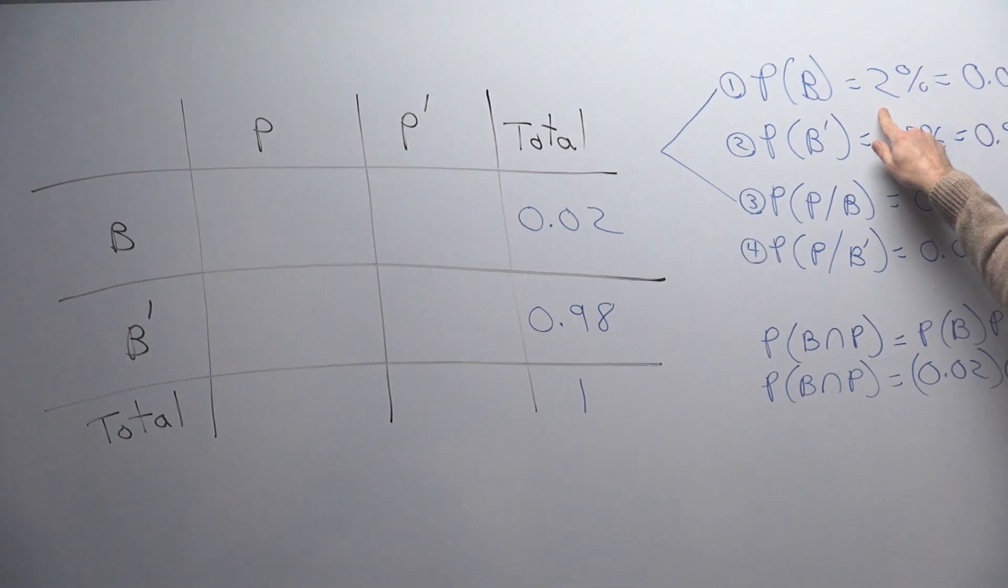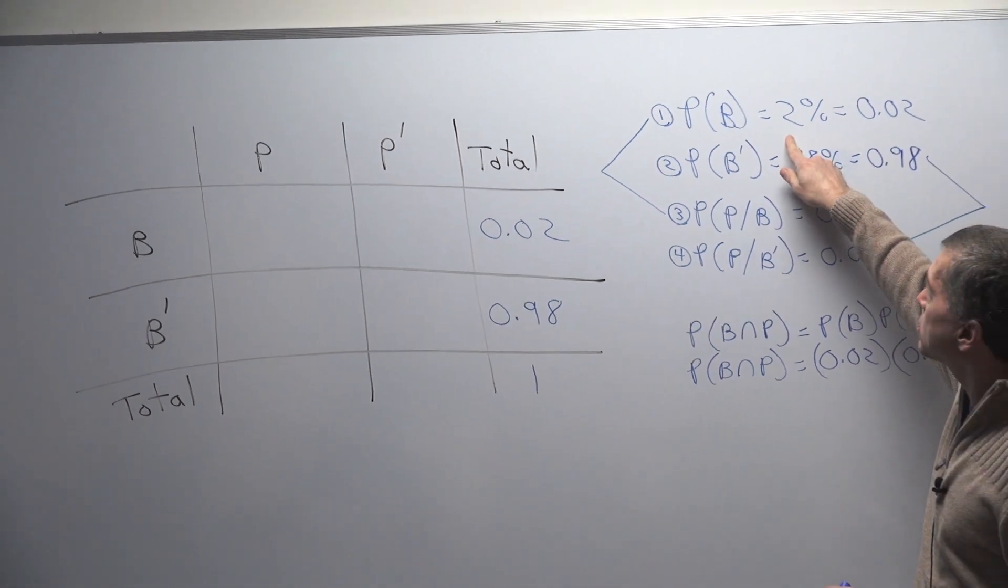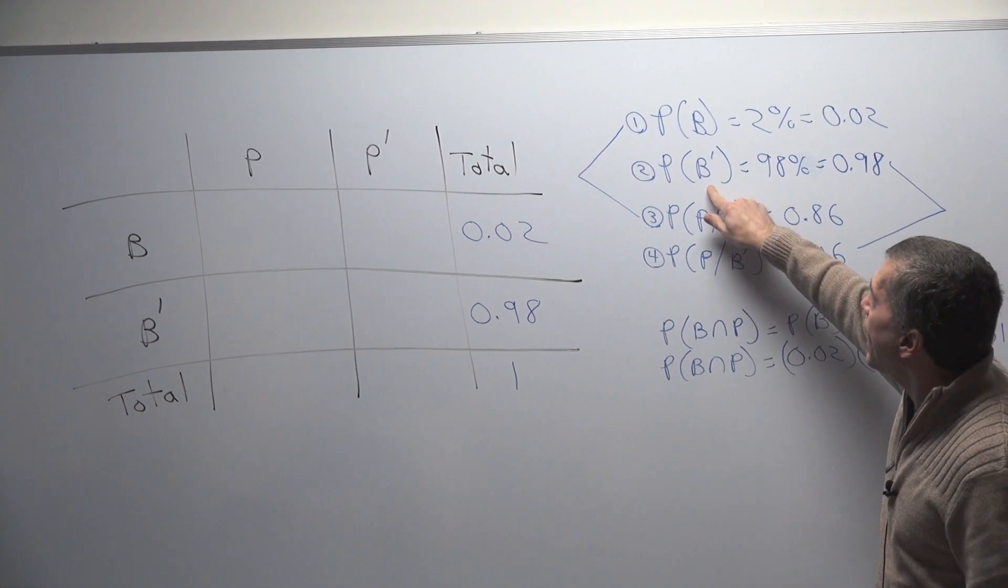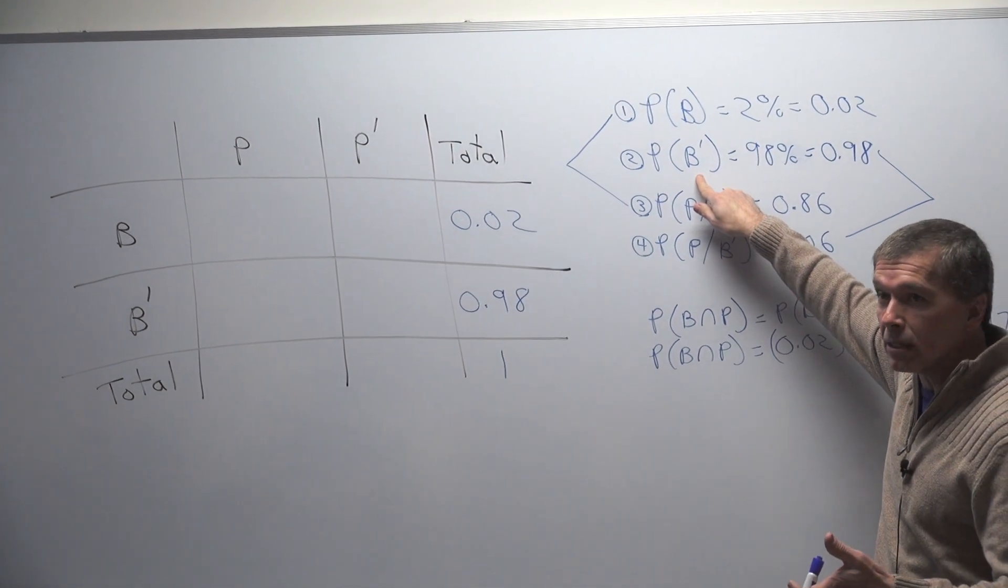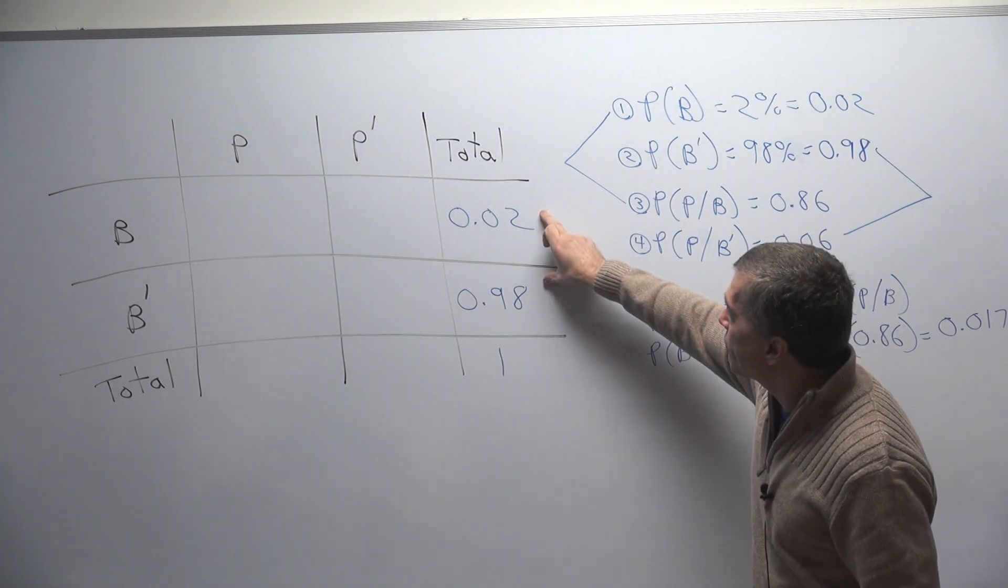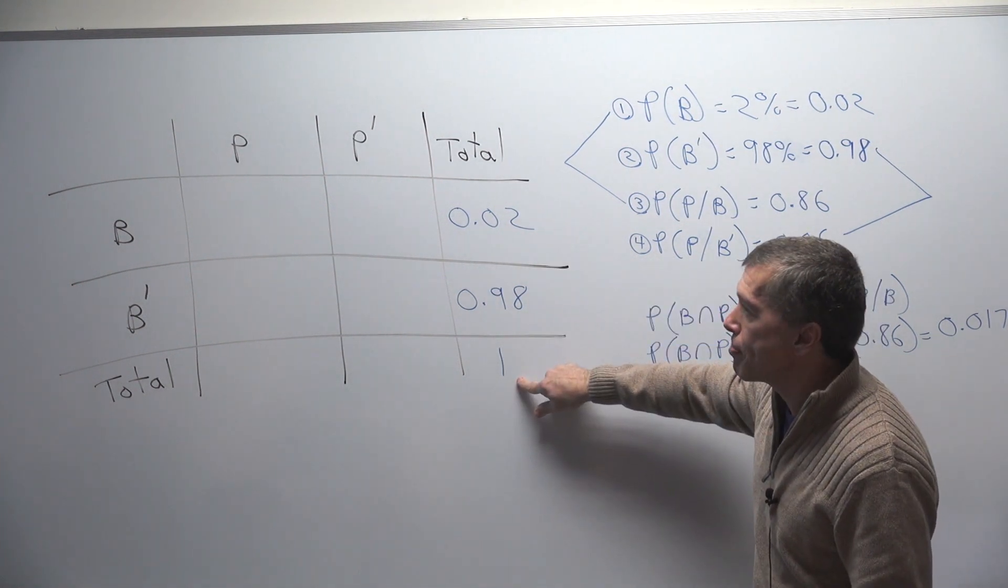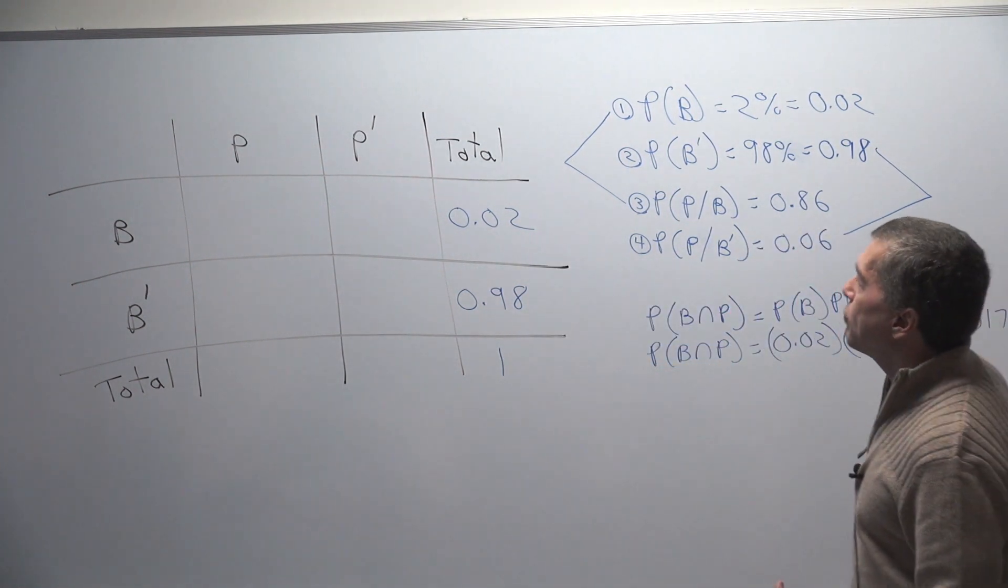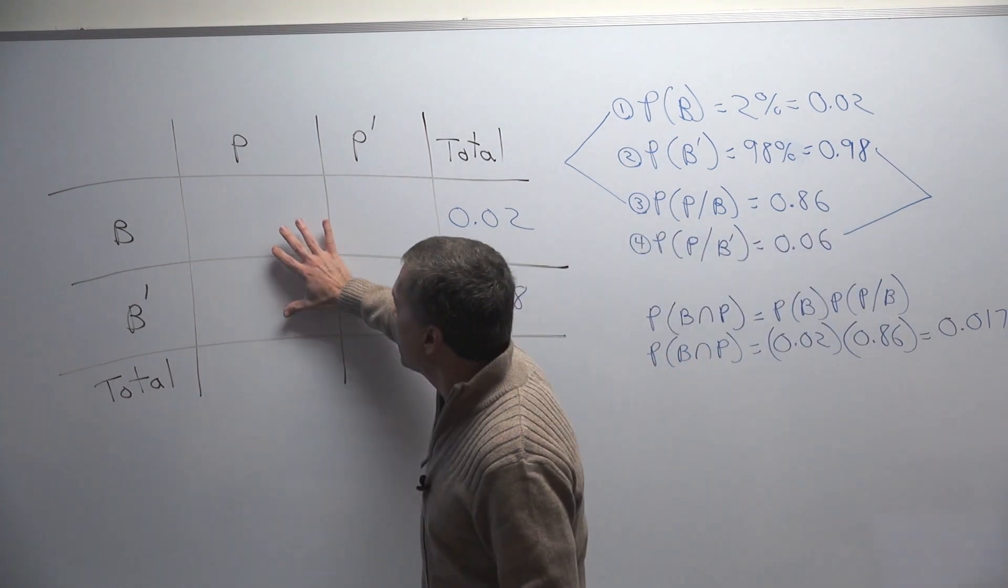If we know the probability of breast cancer is 2% then the probability of not having breast cancer is 1 minus that. 1 minus 2% is 98% and that's right here. These two have to add up to 100% and they do. Now we got to fill in some of these other blanks in here.